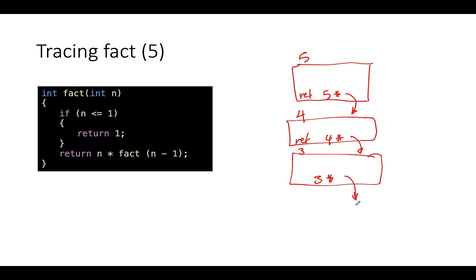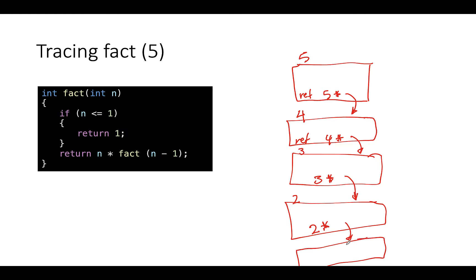Two is not less than or equal to one, so this hits the recursive case one more time: return two times factorial of one. Factorial of one creates another function call with argument one. Now one is less than or equal to one — that's the base case. So we're going to return one.